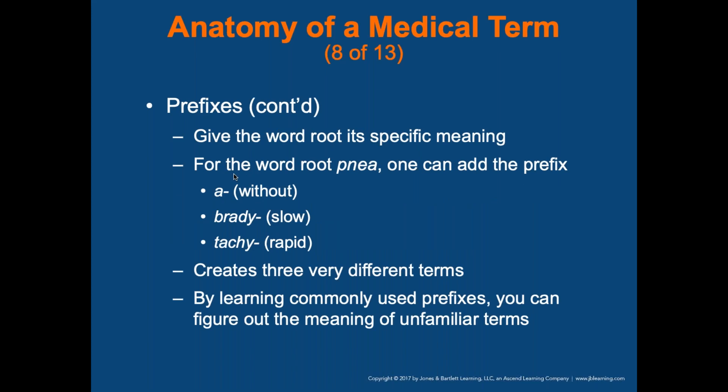Looking at the prefix 'penia' — one can add prefixes like 'a' meaning without, 'brady' for slow, 'tachy' for rapid. So 'tachypnea' would be increased respirations. If I said 'symptomatic,' you'd think they have symptoms; 'asymptomatic' means without symptoms. These prefixes can create a completely different meaning.